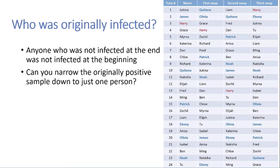A similar argument can be made for Patrick. Patrick, number 15, was positive at the end and wrote his name in blue. But Patrick's first swap was with Chloe, and Chloe was negative. That means at the time Patrick swapped with Chloe, Patrick must have been negative — so we can rule Patrick out as well. Use similar logic to try and identify who was originally infected, if at all possible. For your lab quiz, make sure you explain your reasoning.